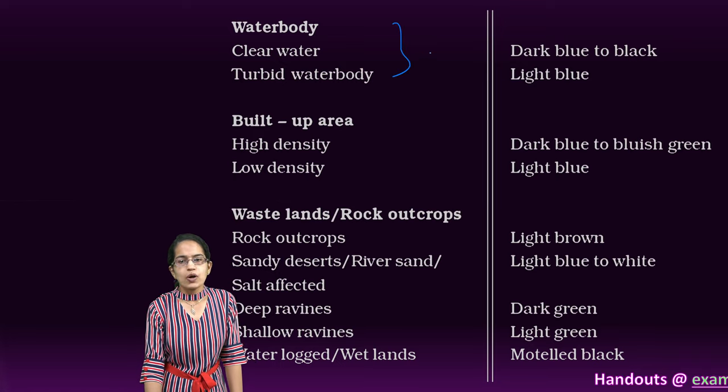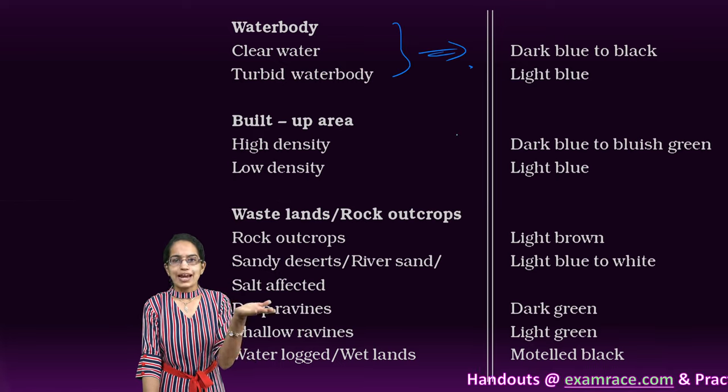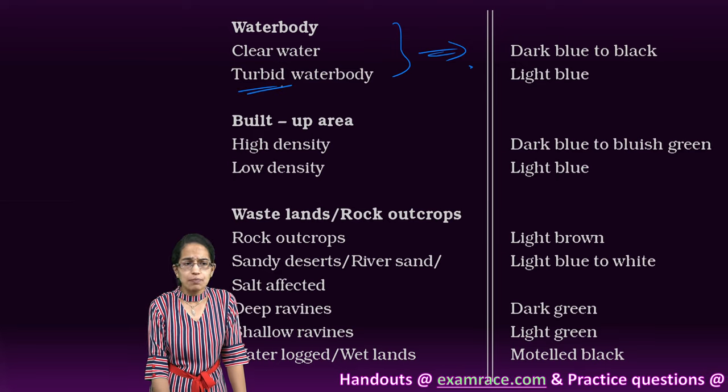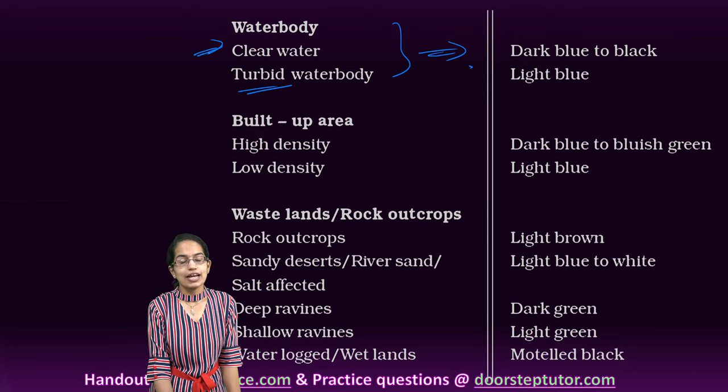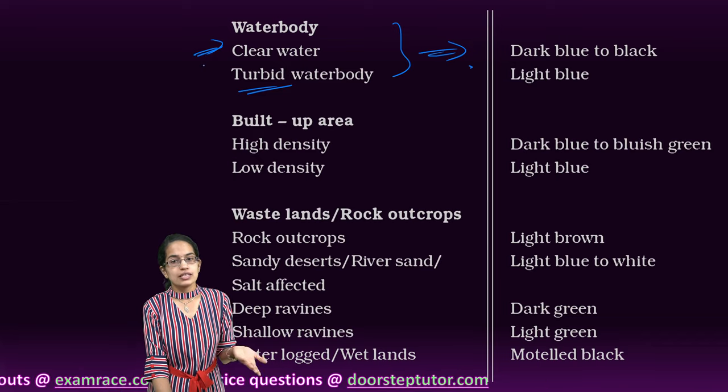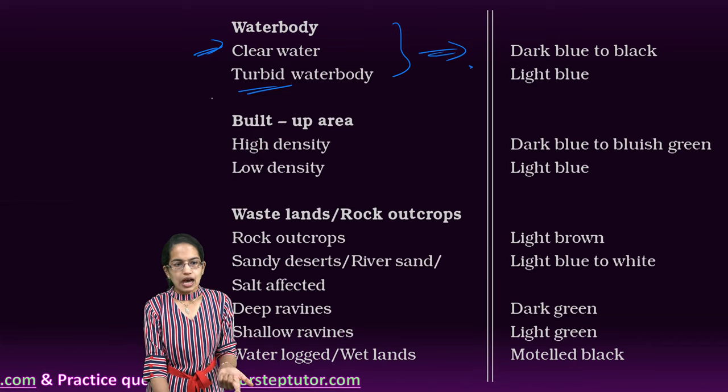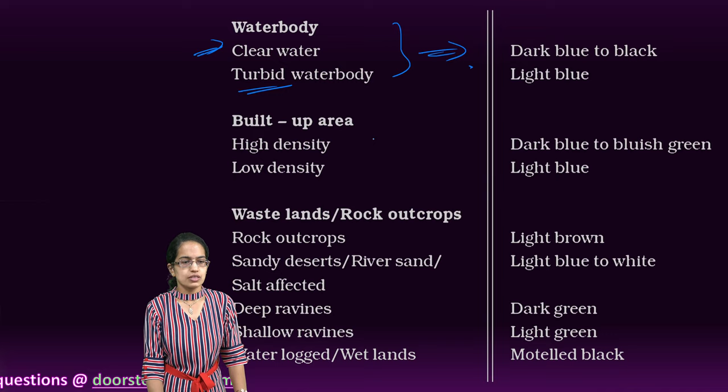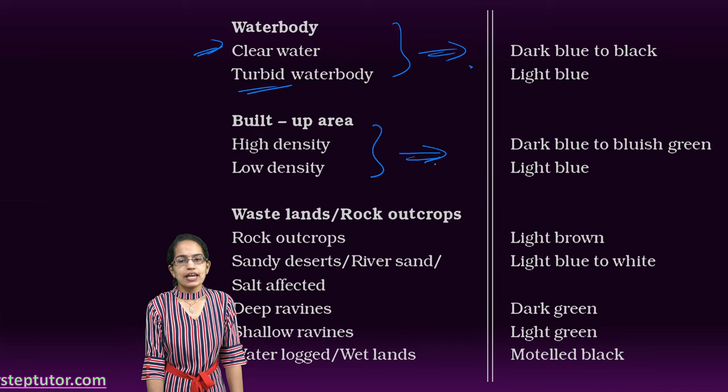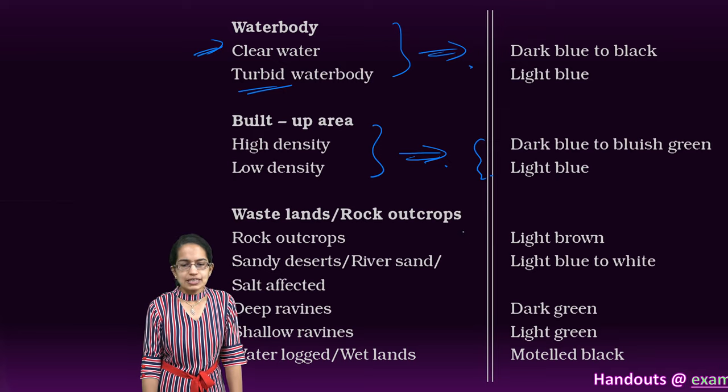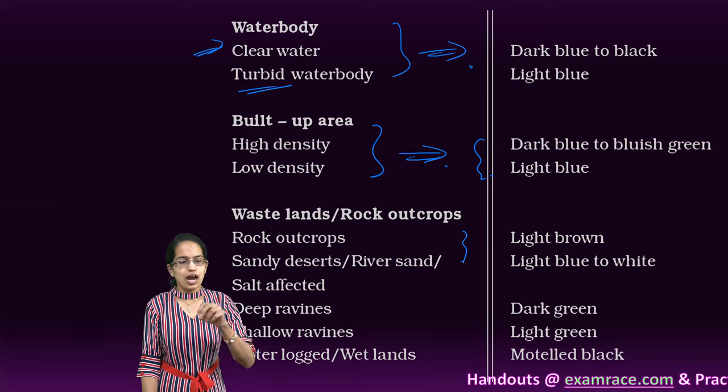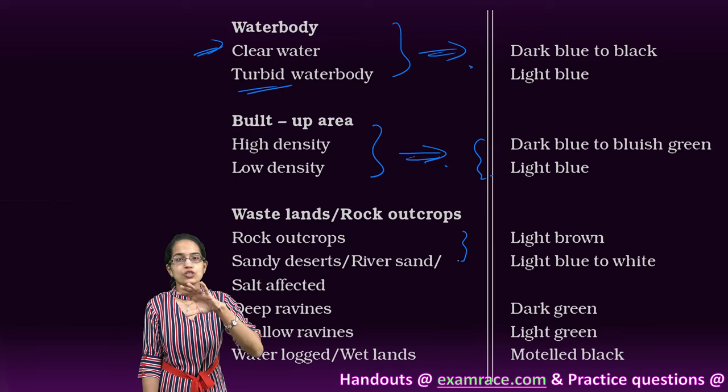On the other hand, if it is a water body, the shades would vary from light blue to dark blue. If it is star bed, it would have light blue. If it is clear water, as we have seen, in that case it would be very dark in color in a false color composite imagery. The built-up area would again be in the shades of bluish green and blue. And the waste areas, the wastelands,